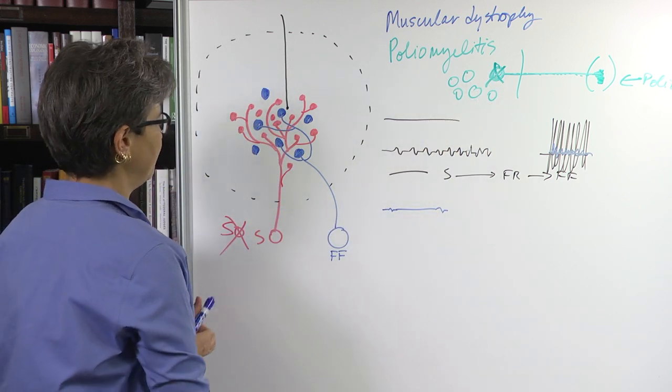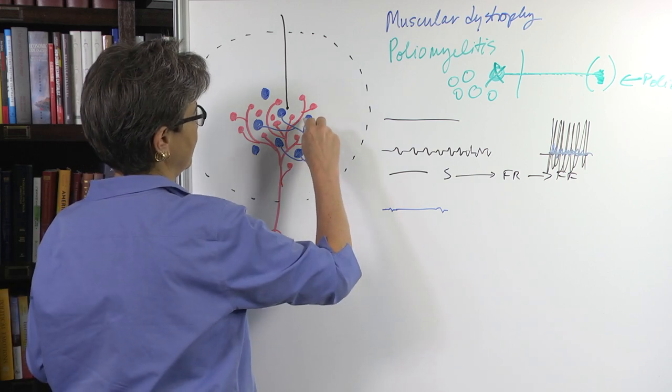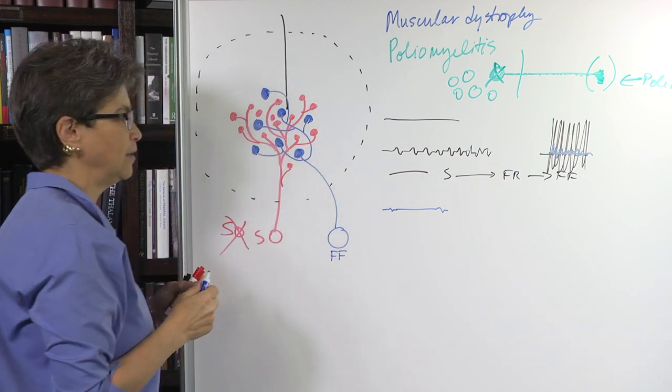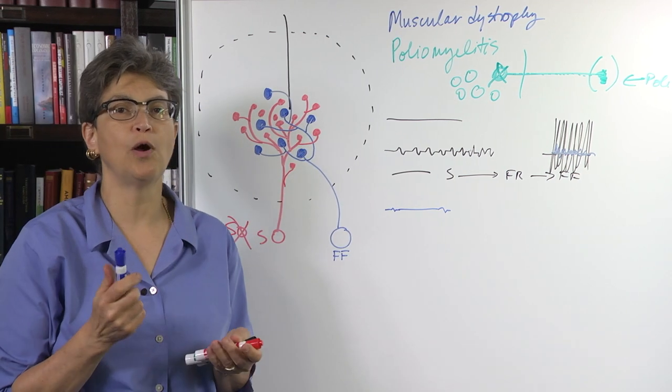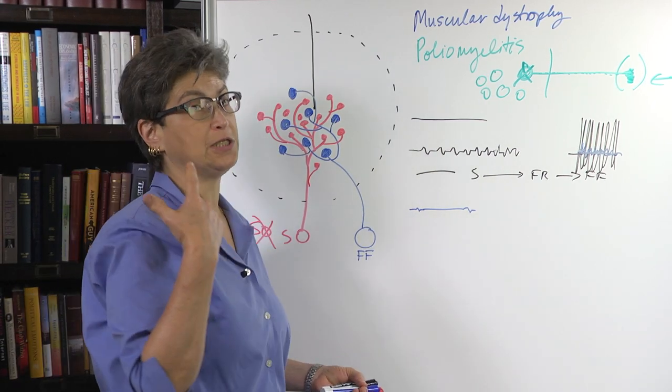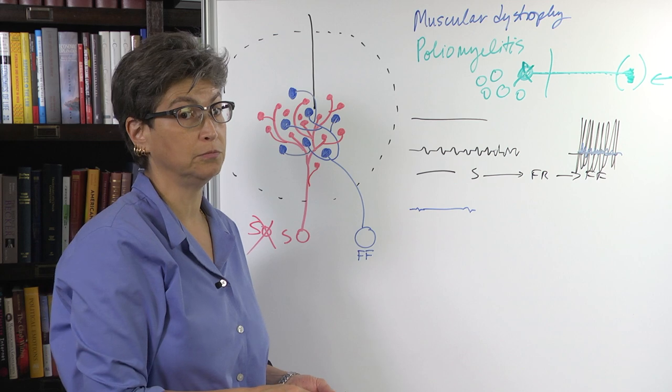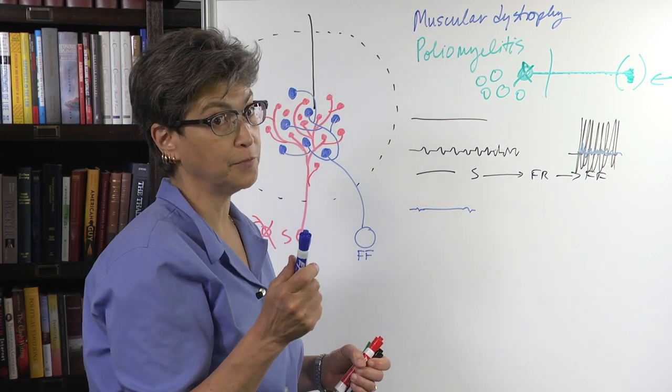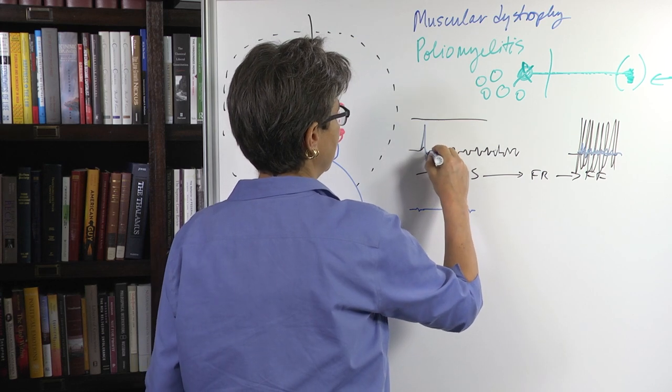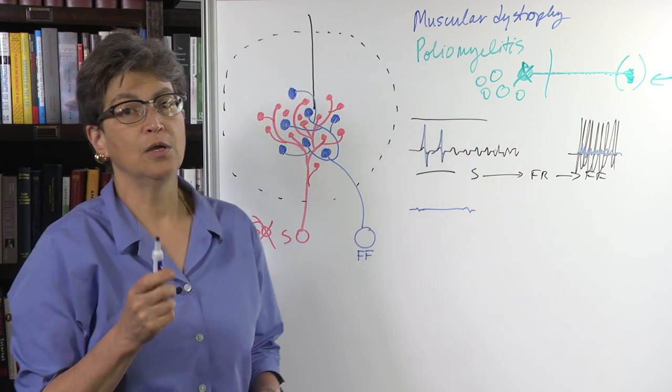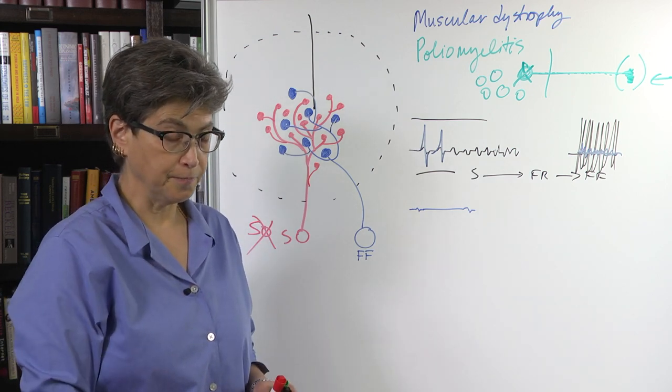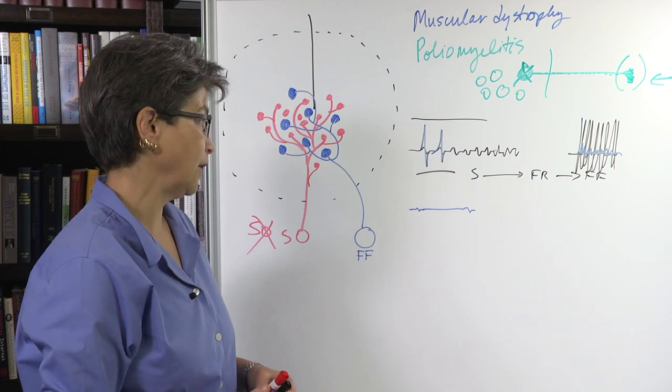The same thing will happen for these fast fatigables. So now they're going to get extra muscle fibers that they're going to innervate. And so what would be the consequence of that? The consequence of that would be that every motor unit would be larger than usual. There would be fewer of them, slightly fewer of them, diminished recruitment, but these are going to be large because the remaining motor neurons have sprouted to innervate additional muscle fibers.